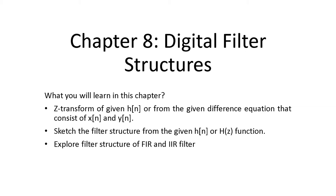In this chapter you will learn about the Z-transform of a given H(n) or from the given difference equation that consists of input and output. Our input is X(n) and our output is Y(n). From the determined H(Z) or the given H(Z), you can sketch the filter structures. You have to make sure that your transfer function is in H(Z) so that you can sketch the filter structure.